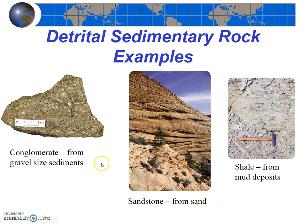These sedimentary rocks can tell us a lot about the geologic history of an area. Wherever you find a conglomerate, you know it was once a river environment. If you find sandstone, you know it was either a beach or a desert, and you need to look for further clues in the rock to figure out which. If you find shale, you know it's probably an ocean or a bay, or perhaps a lake.